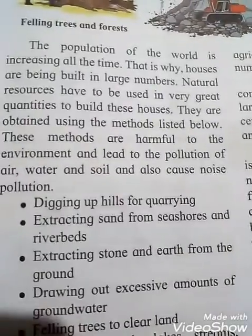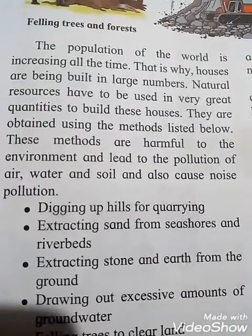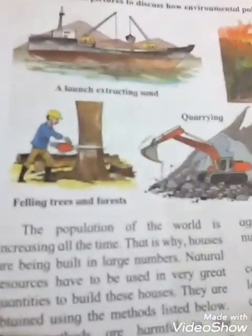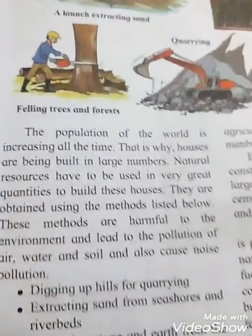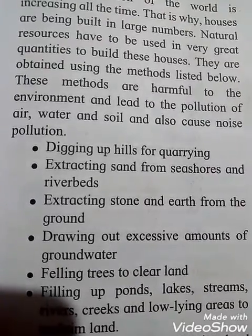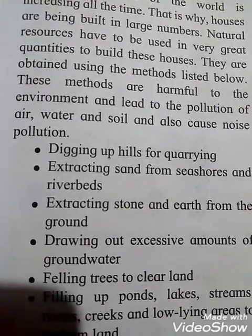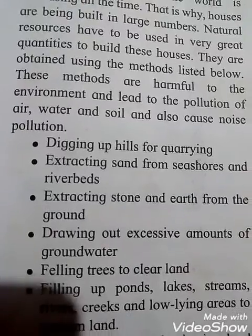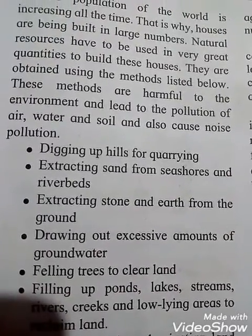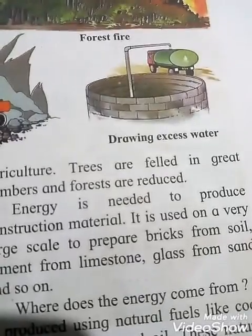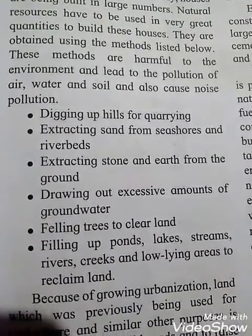Sand is removed from the sea or riverbeds. The third point is extracting stone and earth from the ground. The fourth point is drying out excessive amounts of groundwater.